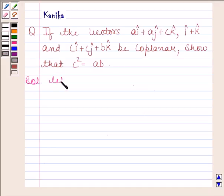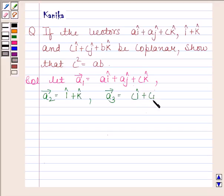Let vector a1 equal ai cap plus aj cap plus ck cap. Vector a2 equals i cap plus k cap, and vector a3 equals ci cap plus cj cap plus bk cap.